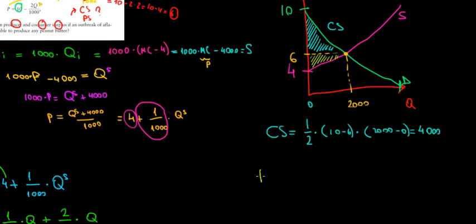The producer surplus will be equal to 1/2 again, because it's a triangle, times the height, which is 6 minus 4, and the length 2000 minus 0, because again it's for the 2000 units that we're selling. 2000 times 2, 4000 divided by 2, that's going to be $2000 worth of value to the producers.